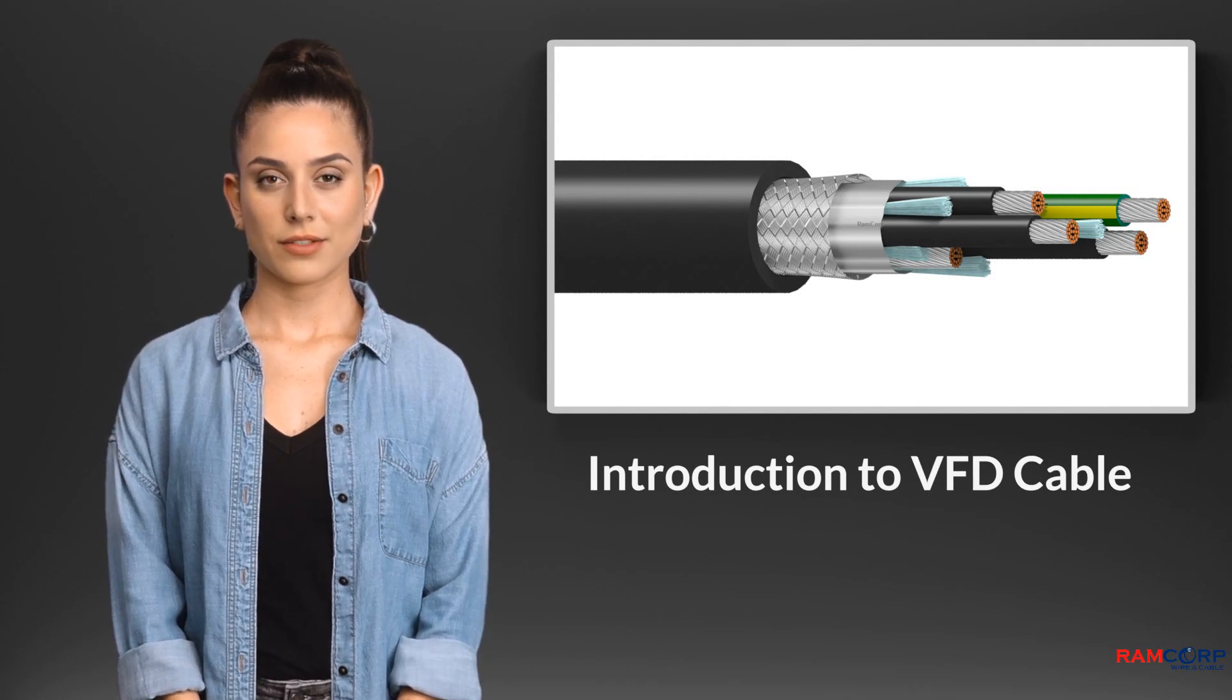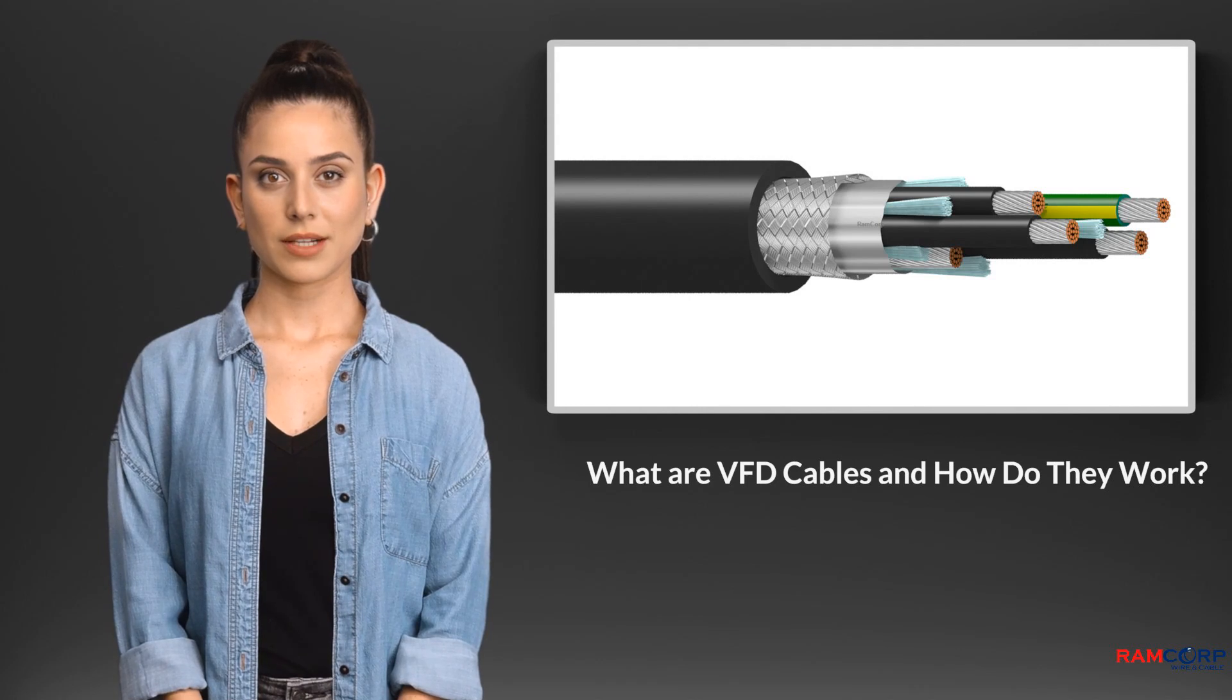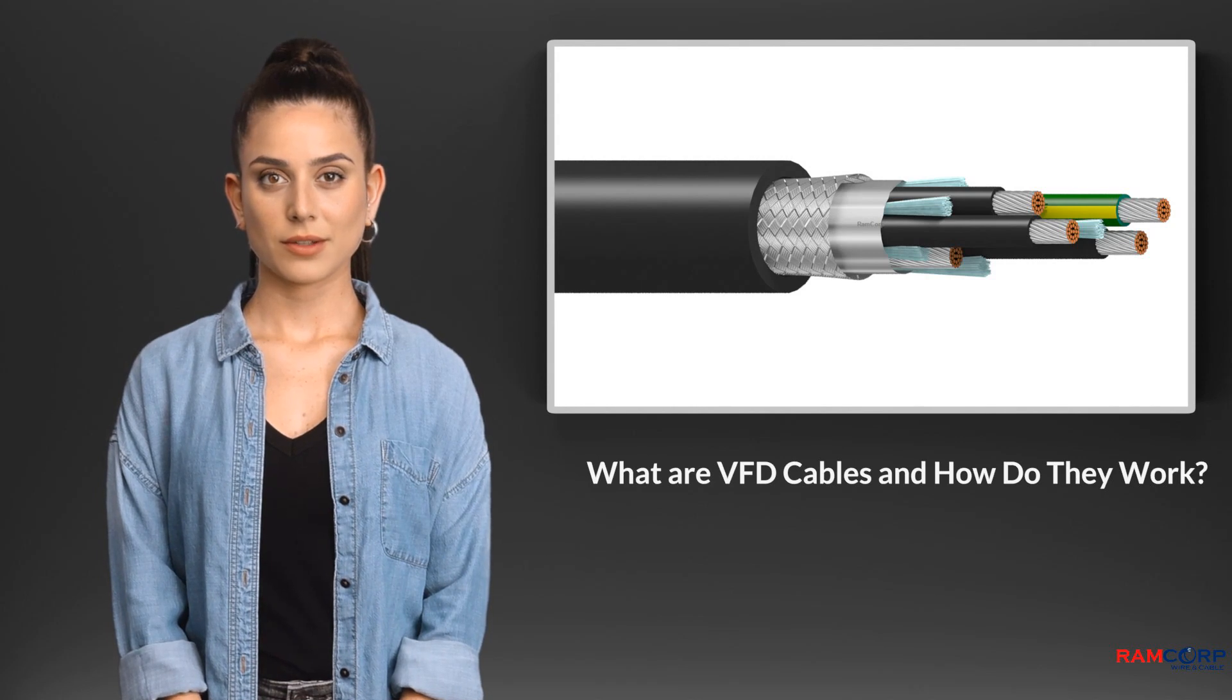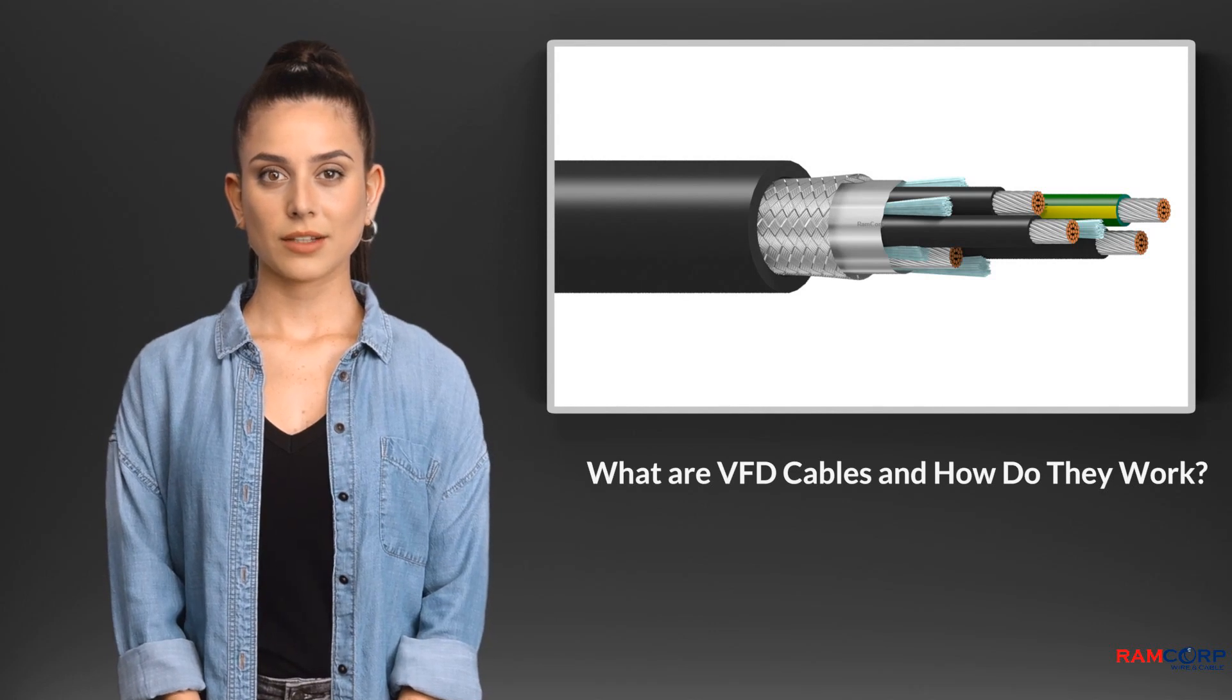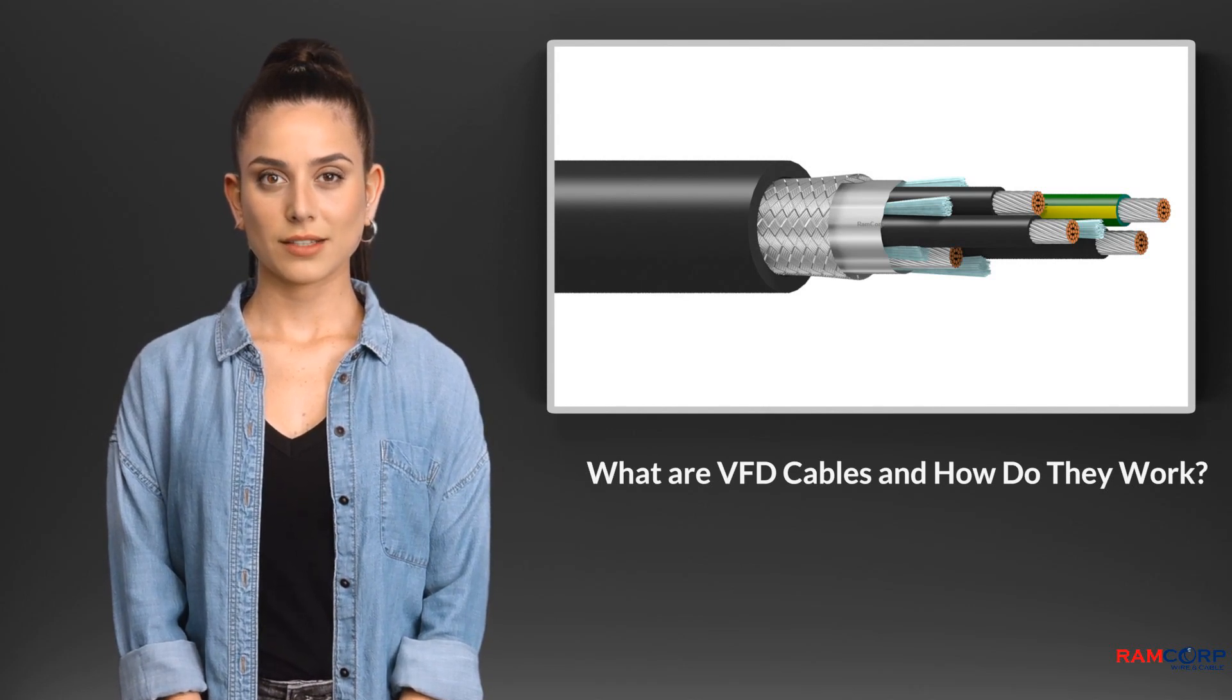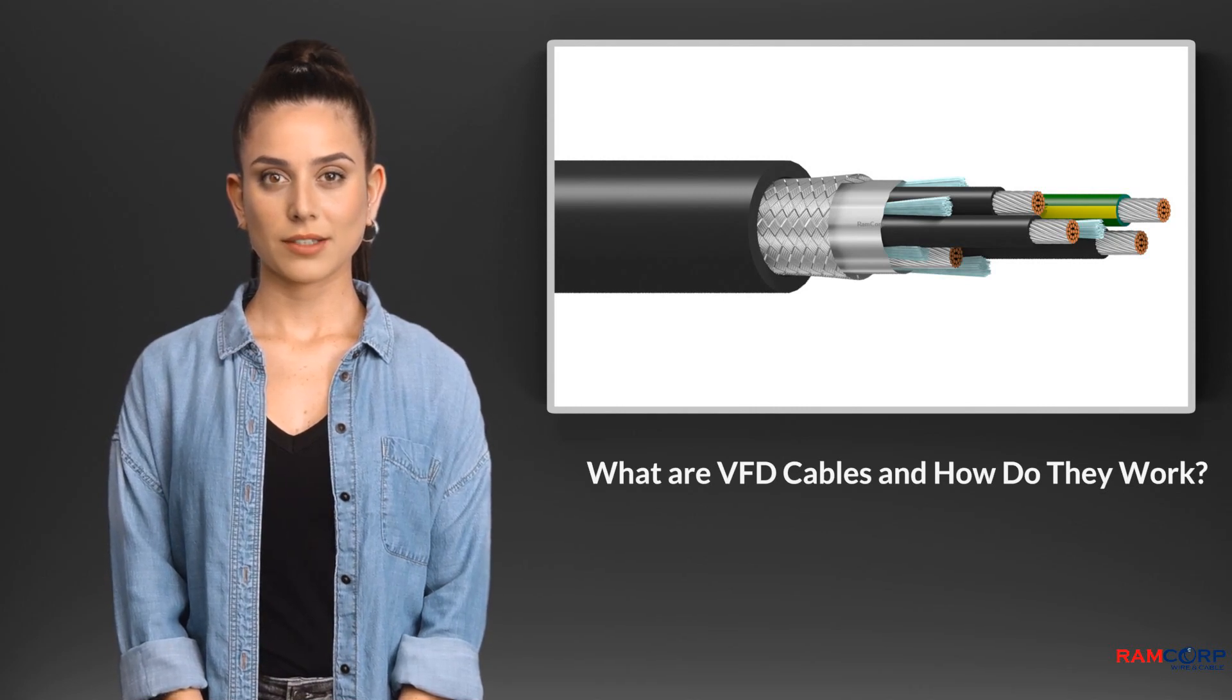To understand the significance of VFD cables, delving into their working mechanism is essential. VFD cables are constructed with specialized materials to mitigate the harmful effects of electrical noise and voltage spikes. These cables consist of multiple layers including conductors, insulation, shielding, and jackets. The conductors carry electrical current from the VFD to the motor. VFD cables are typically designed with stranded conductors to enhance flexibility and reduce the risk of breakage. The insulation layer provides electrical insulation and prevents current leakage.